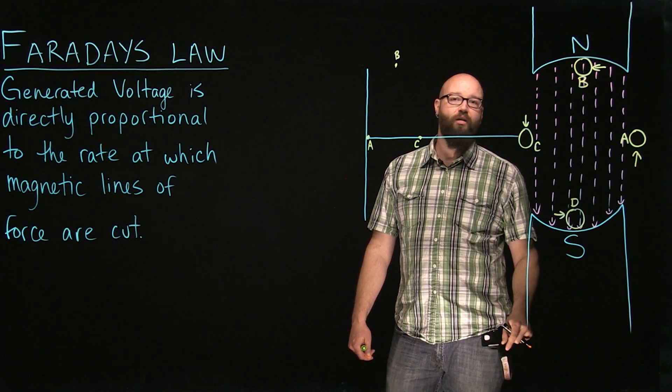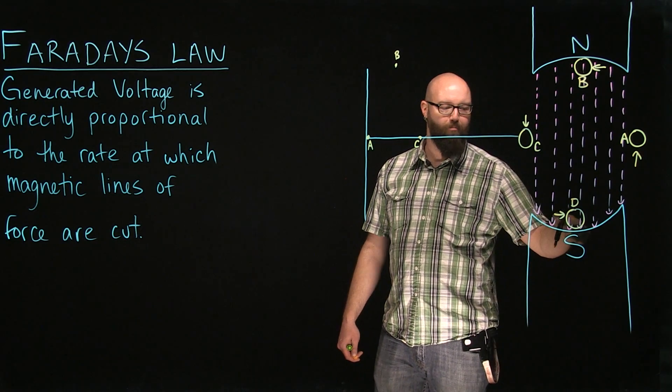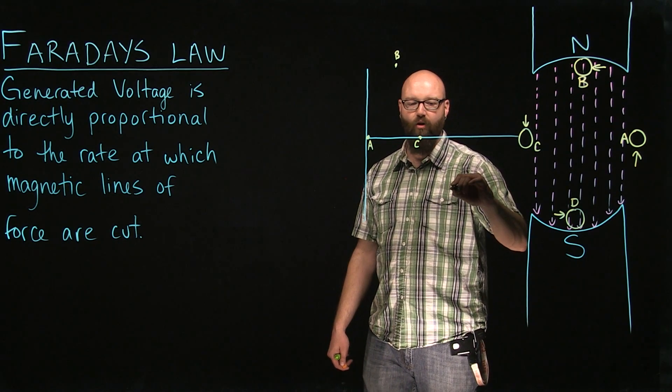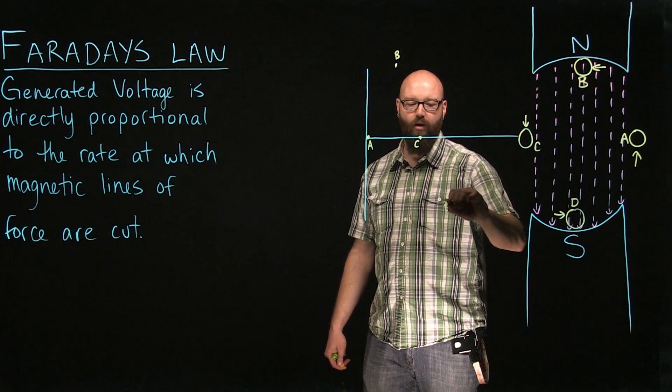So because our conductor is moving the opposite way now, we're actually going to see a maximum generated voltage down in our negative quadrant. We're going to call that our point D.